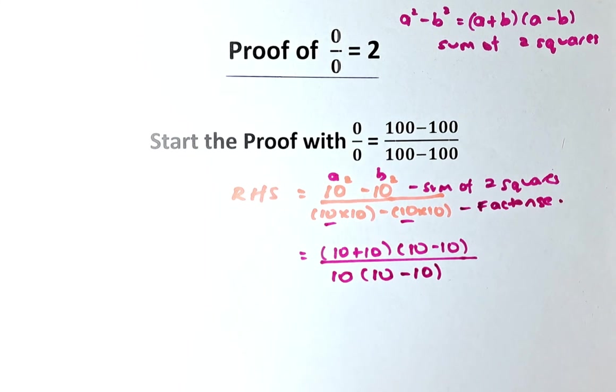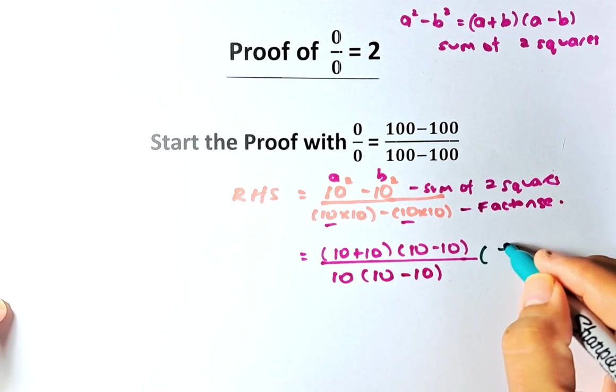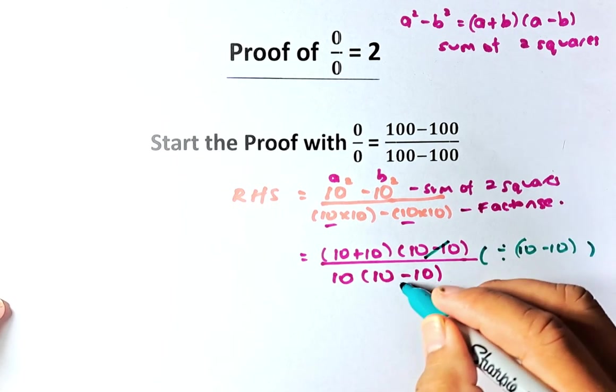The next step is going to be interesting. Because 10 minus 10 is the same as numerator and denominator, so we're going to divide both sides by 10 minus 10. Both the numerator and denominator by 10 minus 10. So we can cancel them out.